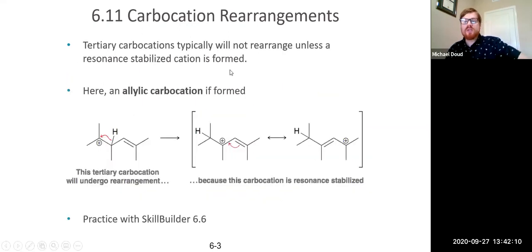Now, we also had an example where we formed an allylic carbocation. That's always something to look out for. So tertiary carbocations usually won't rearrange unless you form an allylic carbocation. So like this tertiary carbocation, if it undergoes hydride shift, you form an allylic tertiary carbocation, and that's resonance stabilized. So that's going to be more stable. So just always keep an eye out looking for the allylic carbocations, because those are going to be resonance stabilized.